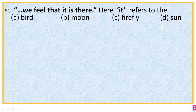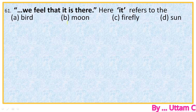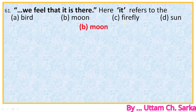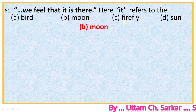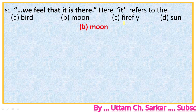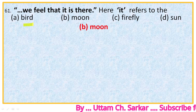Question 61: 'Until we hardly see, we feel that it is there.' Here 'it' refers to — options are bird, moon, firefly, sun. It refers to the moon because this line is part of stanza 5, which is about the moon. The moon is invisible in the early morning, and likewise the Skylark remains invisible but its song is audible.